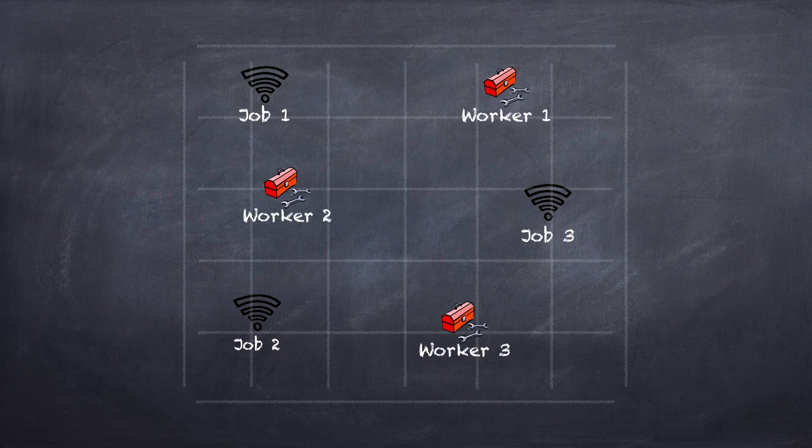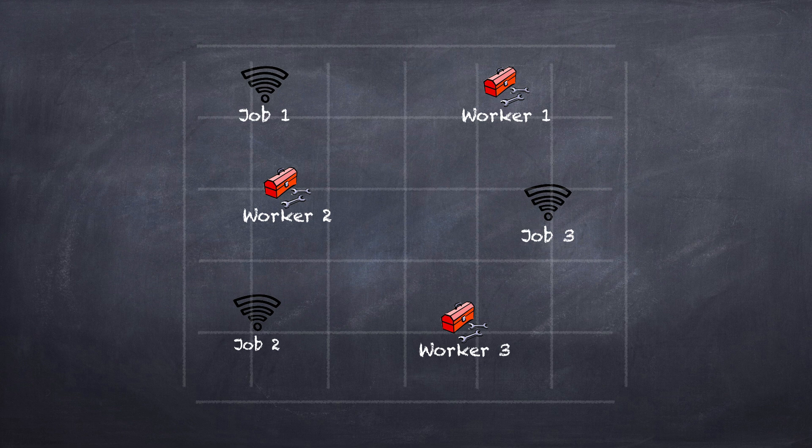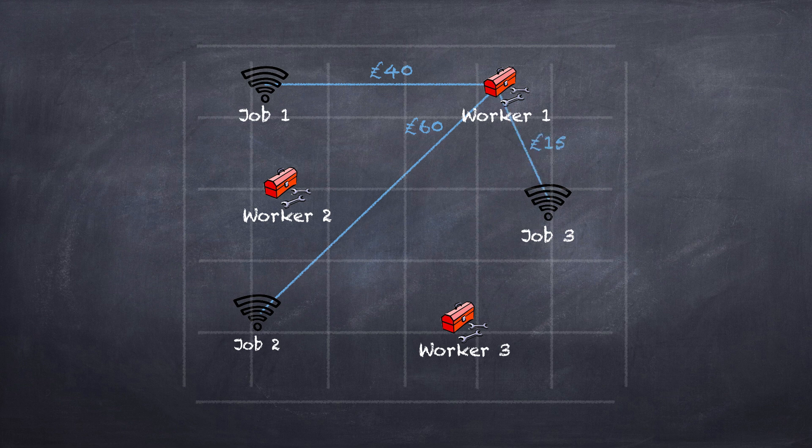Each worker has a cost associated with travelling to each of the three jobs. For example, for worker one it costs £40 to travel to job one, £60 to travel to job two, and £15 to travel to job three. Here are the travel costs for all the workers.